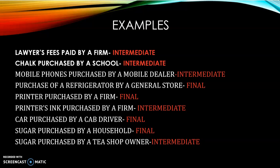Purchase of a refrigerator by a general store — now students are confused. If the store is not selling the refrigerator further, and they bought it to keep things cold for long-term use, then it is not intermediate — it is a final expenditure or final good. Similarly, a printer purchased by a firm is long-term use, so it is a final good. But the printer's ink, which is changed frequently while providing services, gets used up in providing services — so that is intermediate expenditure.